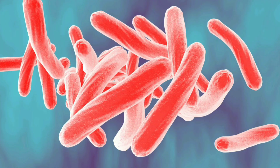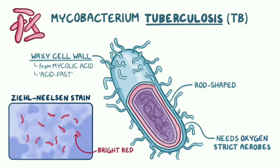This diagram shows Mycobacterium tuberculosis, also known as TB. As discussed earlier, mycobacteria are the only bacteria that stain with acid-fast staining, due to the presence of mycolic acid and a rich lipid cell wall. Due to this special characteristic of the cell wall, they stain bright red with acid-fast staining.